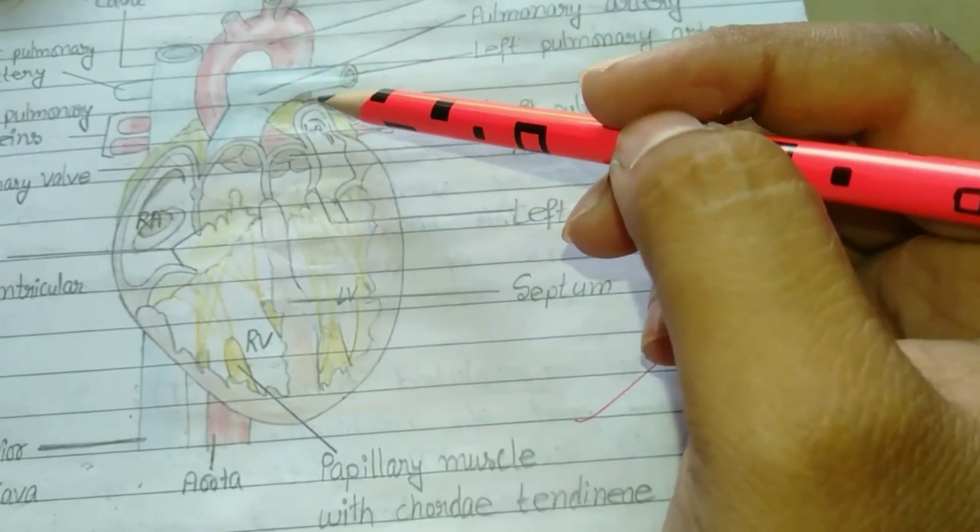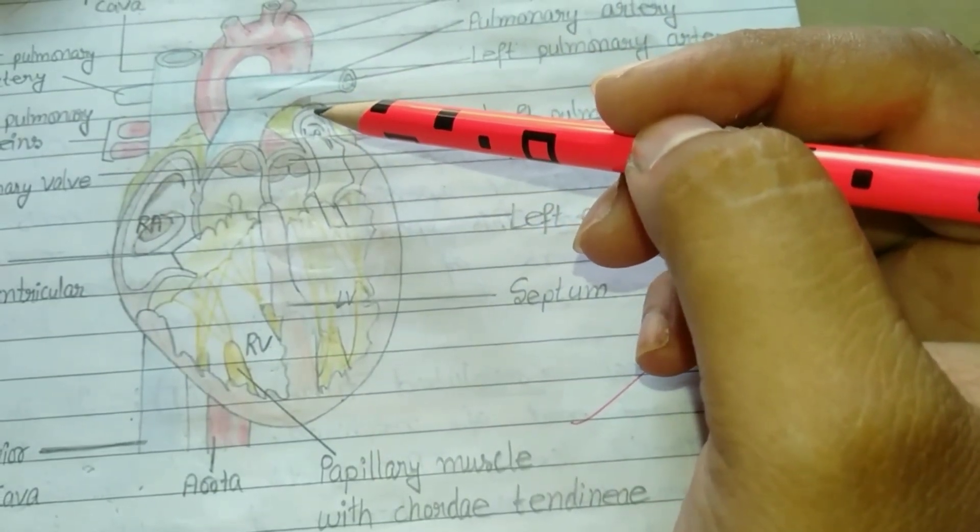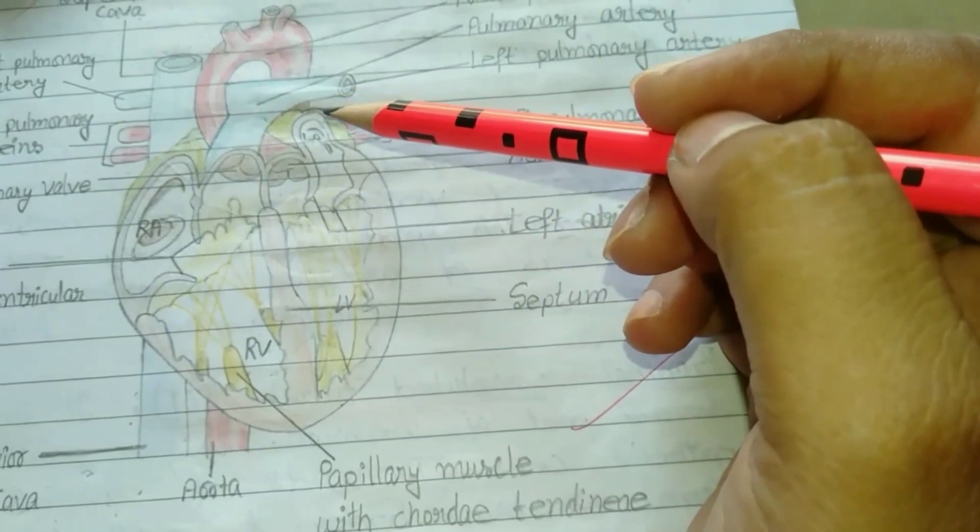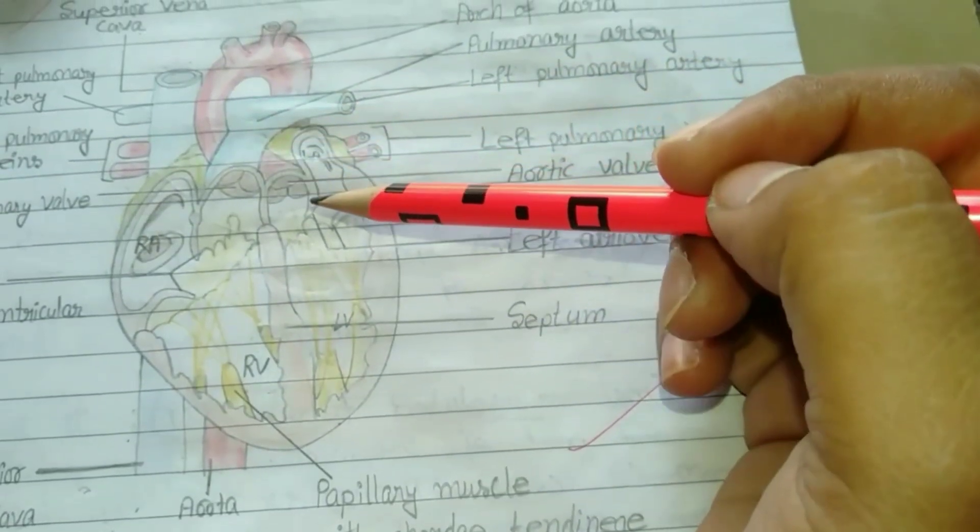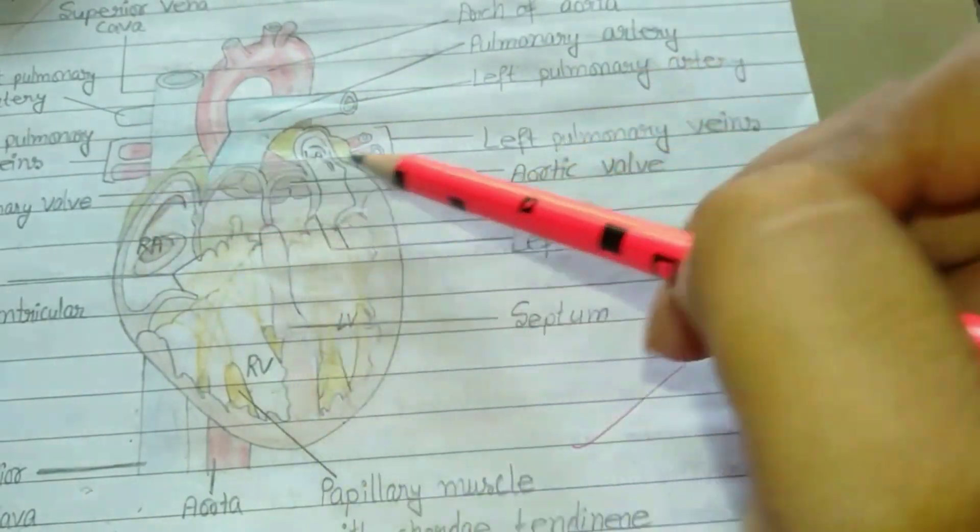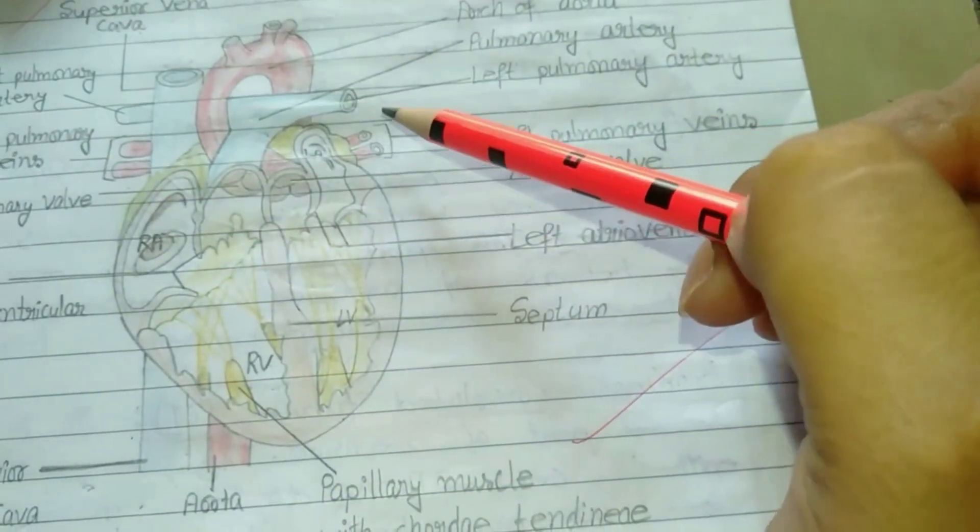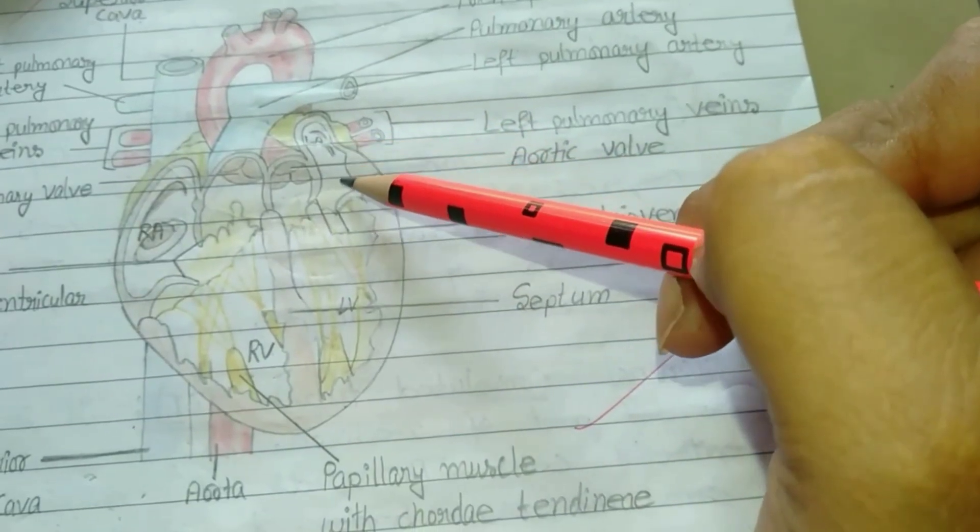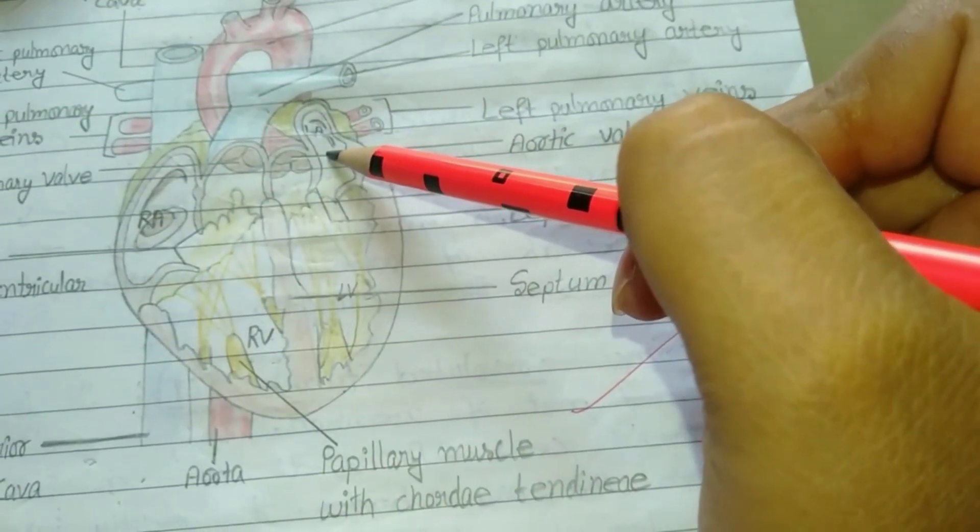When the blood becomes oxygenated it came back to the heart through right pulmonary vein and left pulmonary vein, and from here the blood enters into the left atrium.